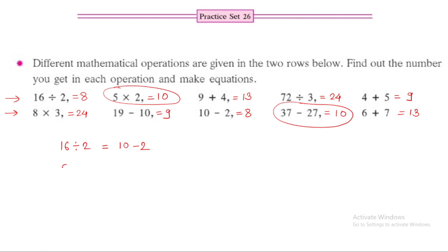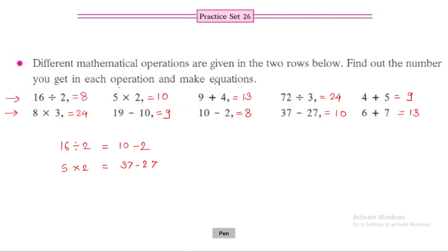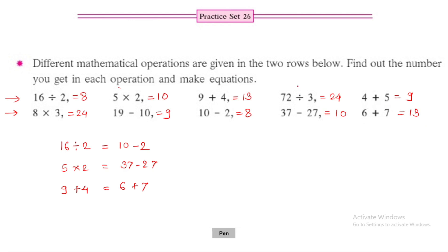The second equation: 5 into 2 is 10, and 37 minus 27 is also 10, so 5 into 2 is equal to 37 minus 27. The next operation: 9 plus 4 is 13, and 6 plus 7 is also 13, so 9 plus 4 is equal to 6 plus 7. Next: 72 divided by 3 is 24, and 8 into 3 is also 24, so 72 divided by 3 is equal to 8 into 3.